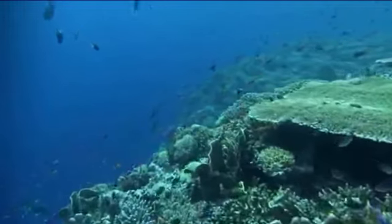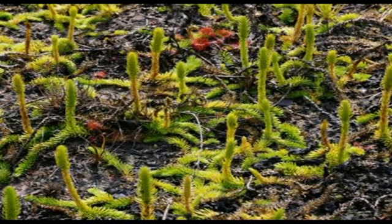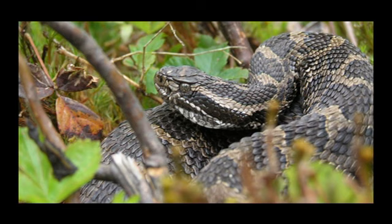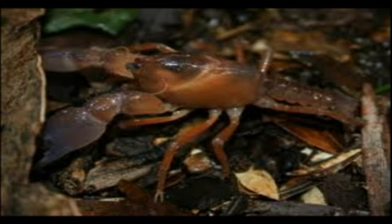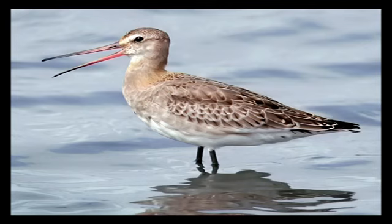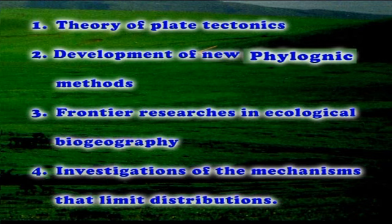In the absence of predation and competition, organisms on isolated regions may survive and diversify. Islands can provide unique patterns for basic understanding of biogeography. When two closely related species are widely separated in space, they are called disjunctions. Disjunctions of genera show greater antiquity than those of single species. Four major developments have revitalized the subject of biogeography after the year 1950: the theory of plate tectonics, development of new phylogenic methods, frontier researches in ecological biogeography, and investigations of the mechanisms that limit distributions.